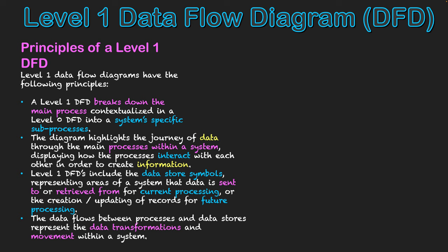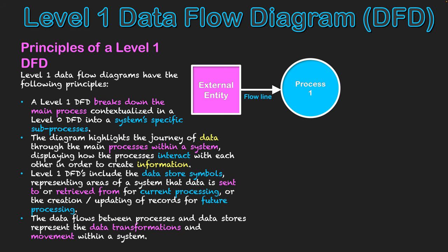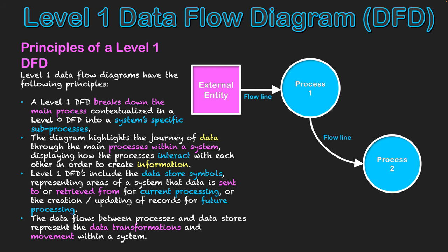Let's look at a sample system with no context given — just logical use of the symbols. Starting with one external entity, they enter data into the system and process one does something to that data. Once process one has done something — such as how the data was collected by the system — it sends it to process two, with the data format written on the flow line. Process two may require additional data beyond what process one sent, so it accesses a data store, sending data to it and retrieving data back, possibly updating and saving it.